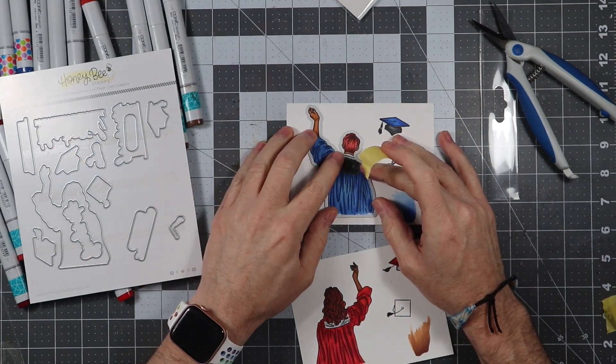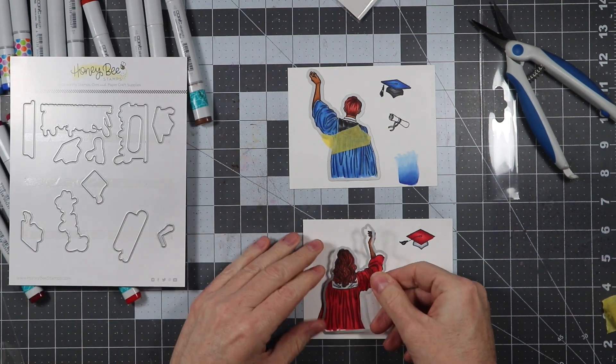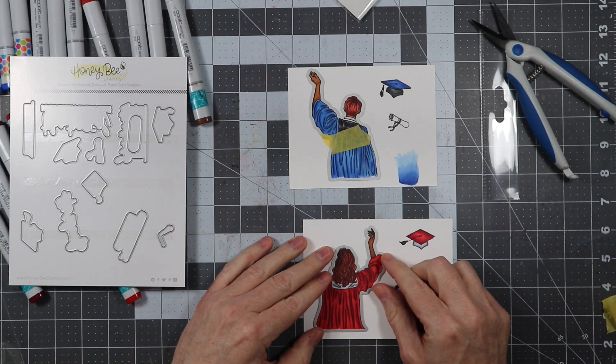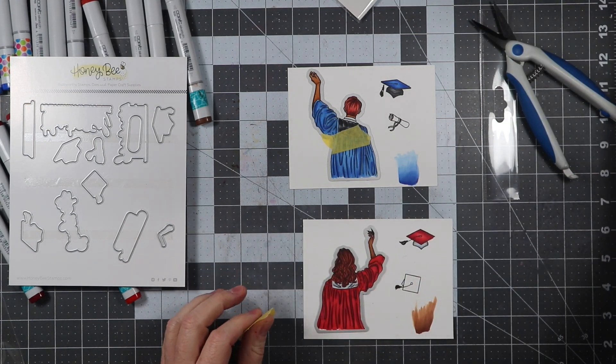Now what we're going to do is use the matching die sets here to go ahead and get these cut out. Again, you can see that the red—I colored it pretty much the same way, except it's just in red and not blue.